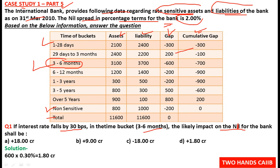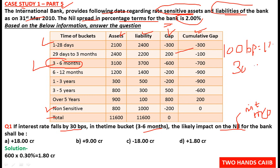NII stands for Net Interest Income. We already know that 100 basis points equals 1 percent, so 30 basis points equals 30 divided by 100, which is 0.30 percent. The interest rate is falling, so the rate change we use is 0.30 percent.